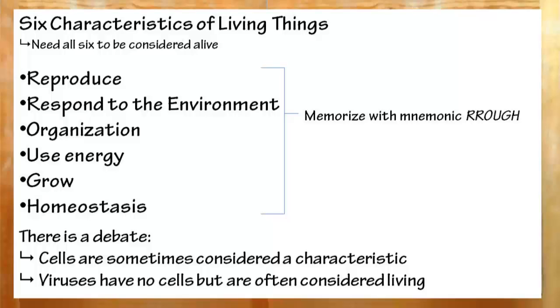To recap, all living things reproduce, respond to the environment, display a high level of organization, use energy, grow, and maintain homeostasis. You can memorize this with the mnemonic, RROUGH.